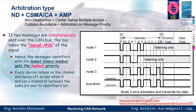If two messages are simultaneously sent over the CAN bus, the bus takes the logical AND — meaning one AND zero gives us zero. The identifier with the lowest binary number gets the highest priority. Looking at node 1, node 2, node 3, and the bus level — they all sent the start of frame together, and in the end, the ID with the smallest value, which is node 3, won the bus. It continued to send the identifier, then the control field, then the CRC and end of frame.